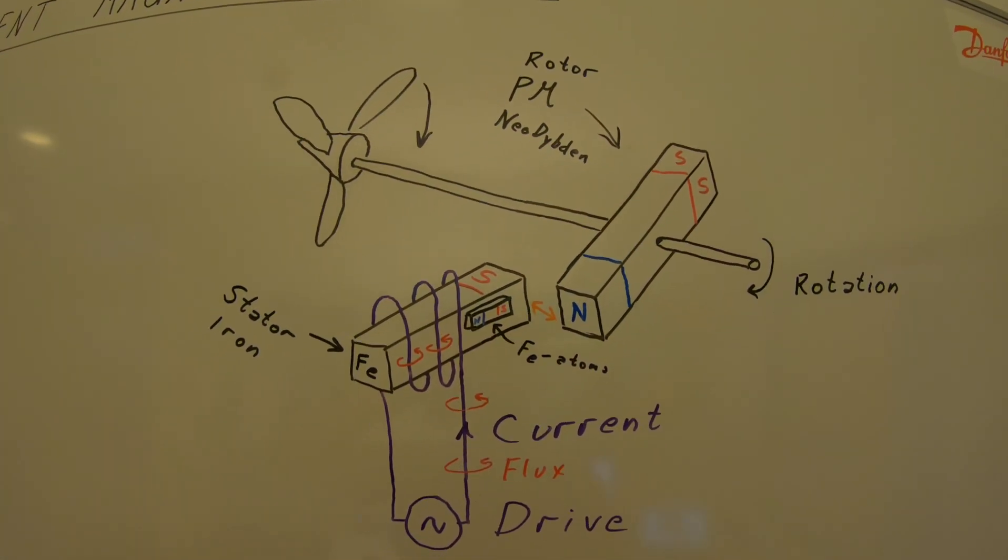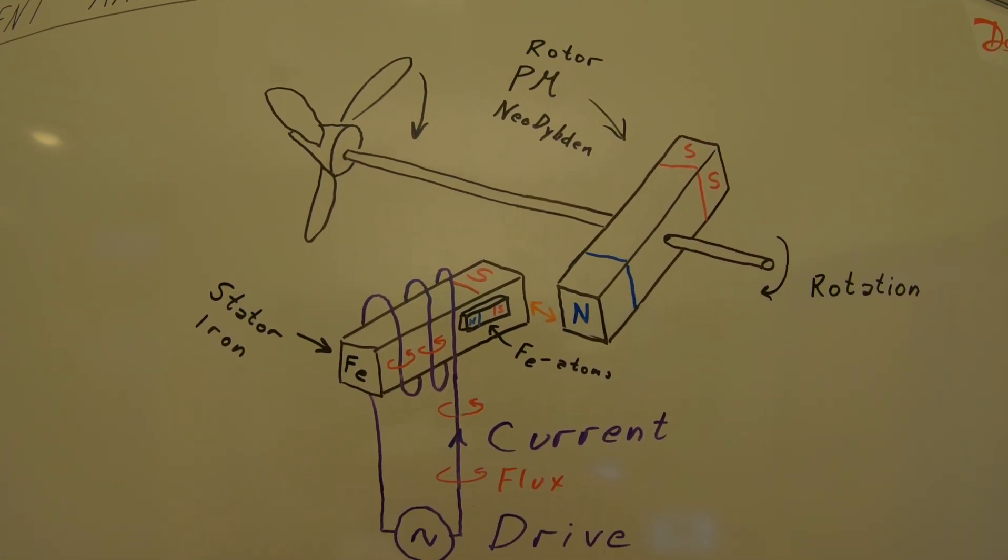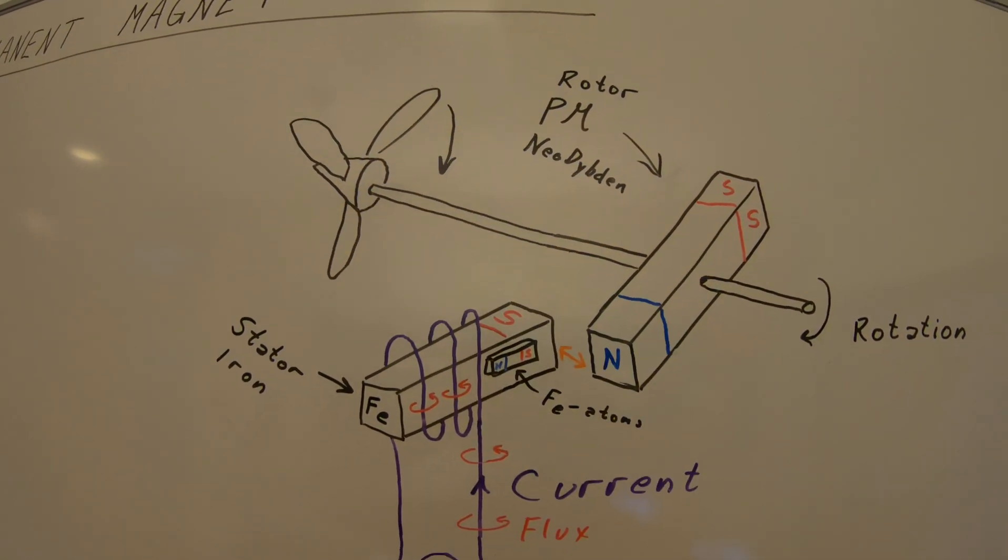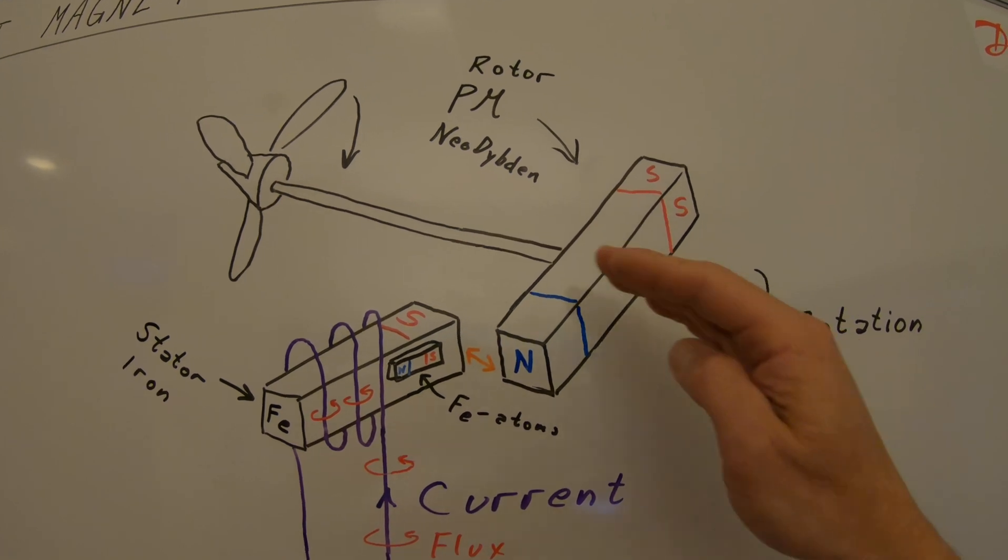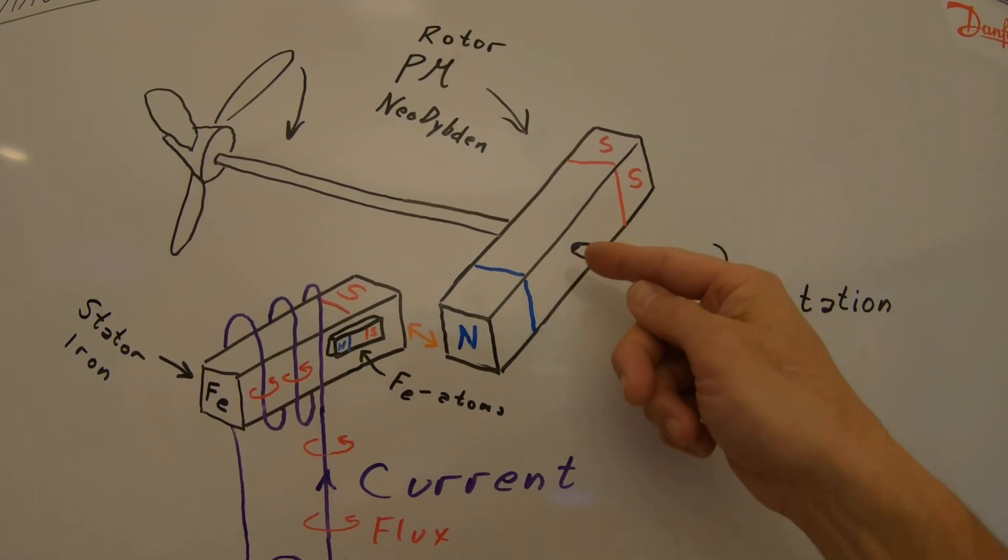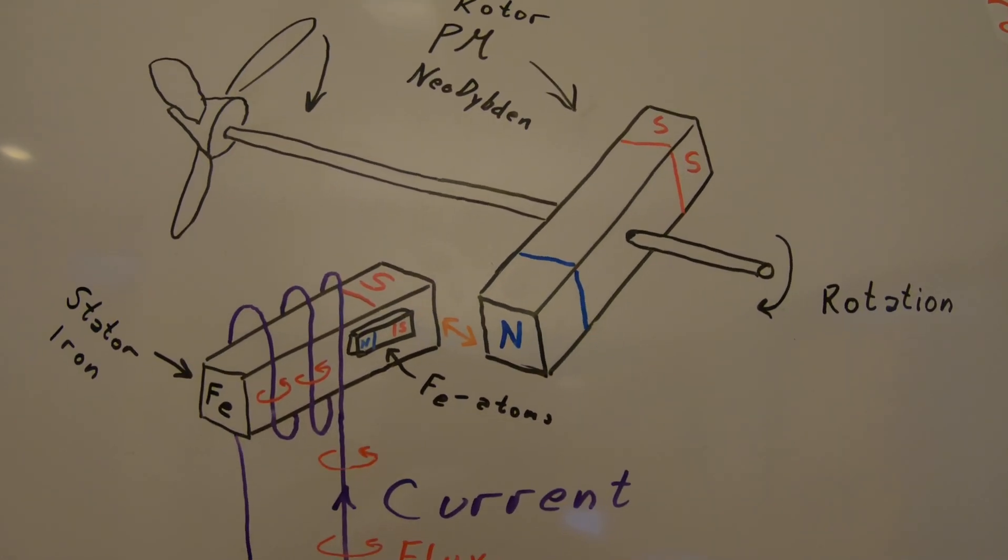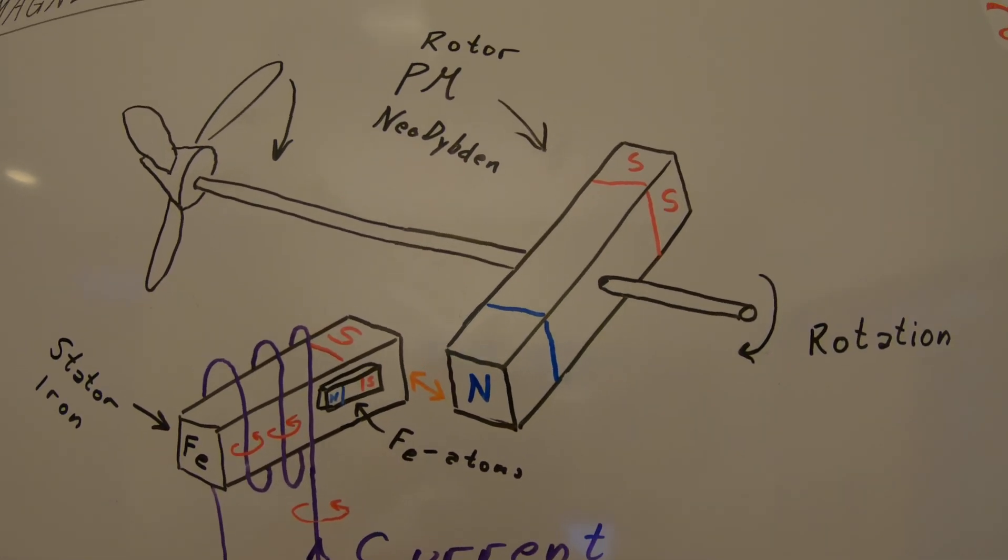How does the permanent magnet motor actually work? Here we have a drive shaft with a process here, a ship propeller. On the drive shaft we have put a permanent magnet made of a material called neodymium which is a very strong magnetic rare metal.